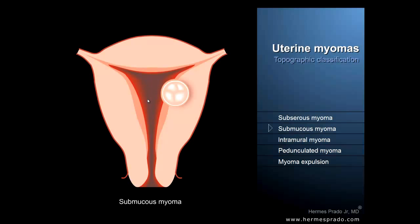Another important consequence is infertility, and it occurs when the tumor grows near the fallopian tube outlets, reducing the lumen of the tubes and impeding the passage of both sperm and ovum.